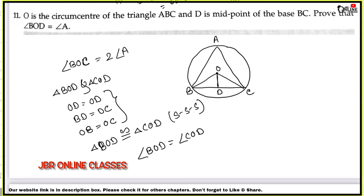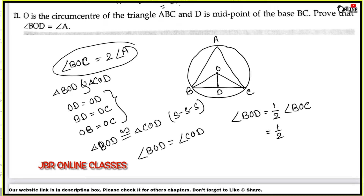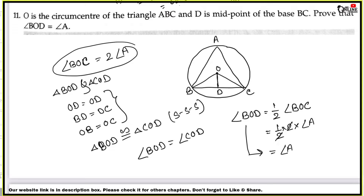Therefore, angle BOD equals angle COD by CPCT. So we can write angle BOD equals half of angle BOC. And since angle BOC equals 2 times angle A, cancelling the 2, we get angle BOD equals angle A. Hence proved.